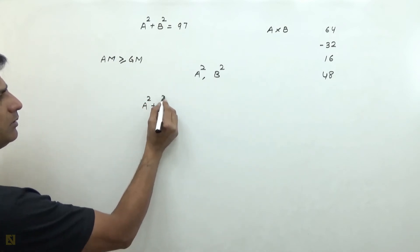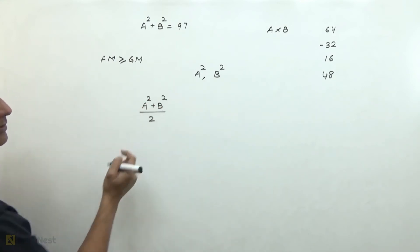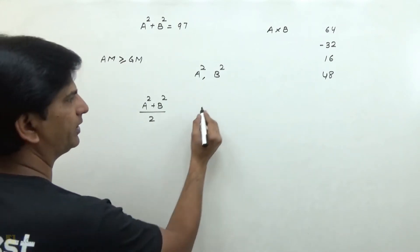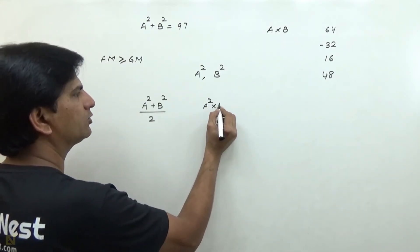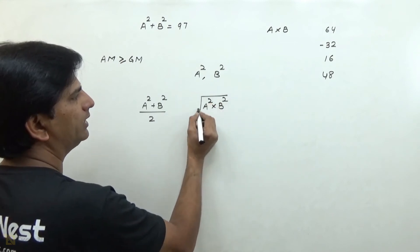A square plus B square divided by 2. And what does it mean? A square into B square under root.